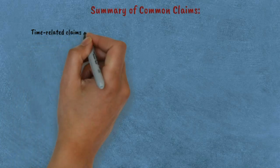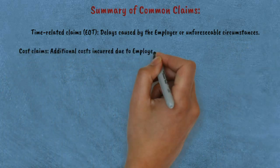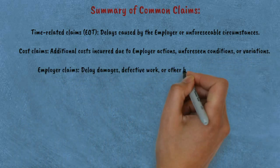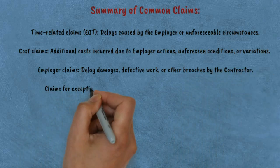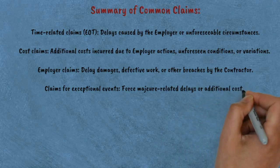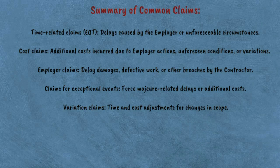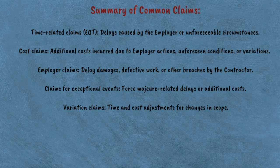Summary of common claims: time-related claims (EOT) for delays caused by the employer or unforeseeable circumstances; cost claims for additional costs incurred due to employer actions, unforeseen conditions, or variations; employer claims for delay damages, defective work, or other breaches by the contractor; claims for exceptional events covering force majeure-related delays or additional costs; and variation claims for time and cost adjustments for changes in scope. All of these types of claims are generally managed through Sub-clause 20.1, which provides a structured procedure for how claims should be made, assessed, and resolved. The process usually begins with a notice of claim, followed by detailed particulars and then the engineer's assessment or determination as detailed in Sub-clause 3.7.